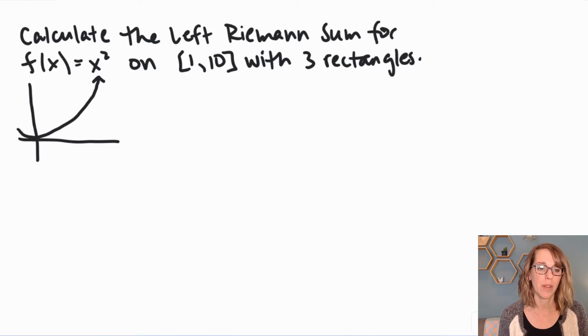So I've got my example. My example is going to be f of x squared. We're going to estimate the area under this curve between 1 and 10 using three rectangles. And we're going to use left side rectangles.